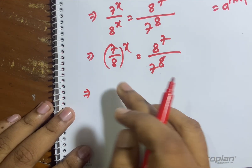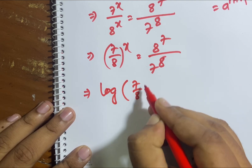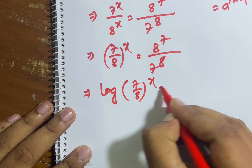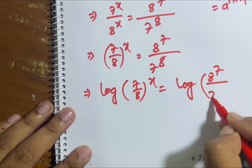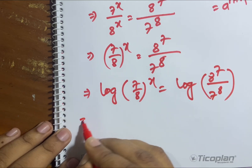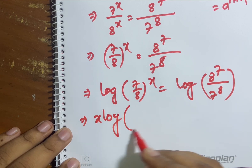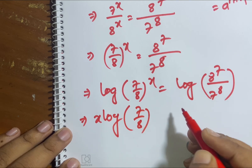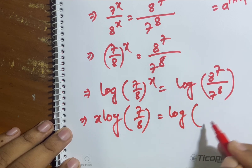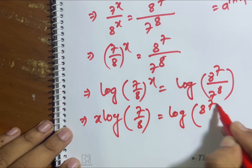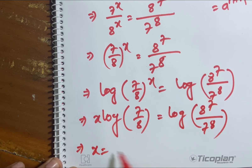Now I multiply both sides by log. So log of (7/8)^x equals log of (8^7 / 7^8). This gives us x times log(7/8) equals log(8^7 / 7^8).